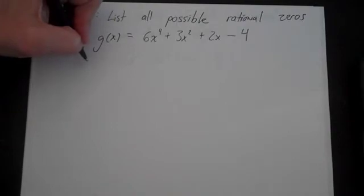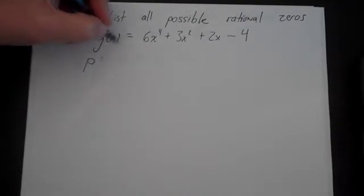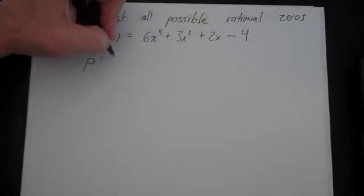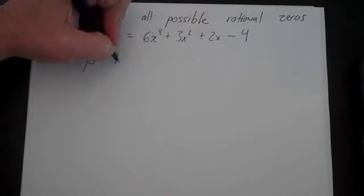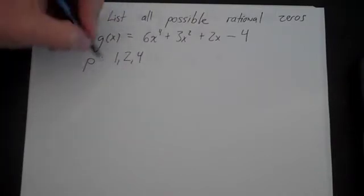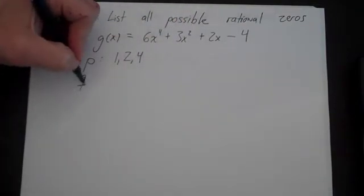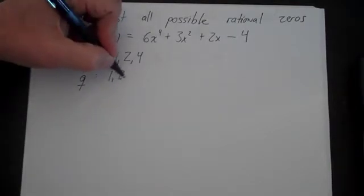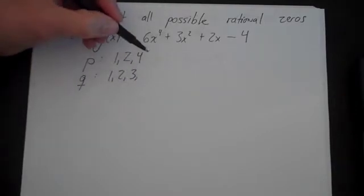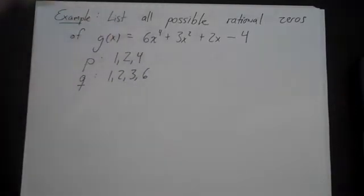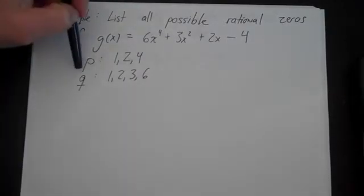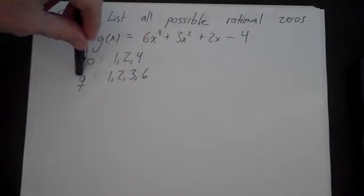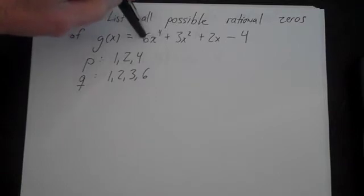P is going to be the integer factors of -4, so the integer factors of 4 are 1, 2, and 4. The integer factors for Q are going to be the integer factors of 6, which are 1, 2, 3, and 6. P is defined from the constant term — it's the integer factors of the constant term. Q is defined by the leading coefficient — it's the integer factors of the leading coefficient.